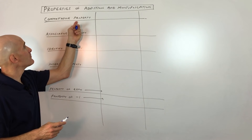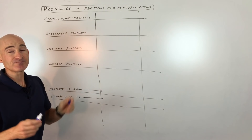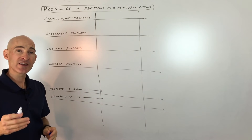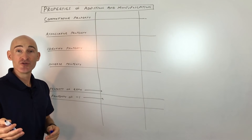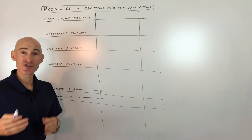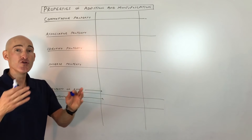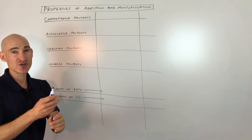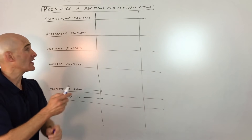The first property is the commutative property. Just like your parents, or you, take a commute — you drive in your car, you're moving. So when you think of commuting, you can think of moving.